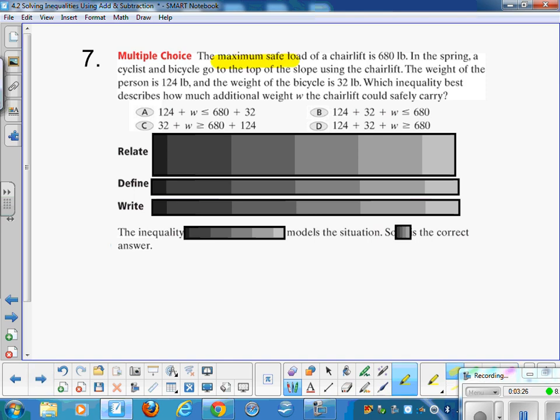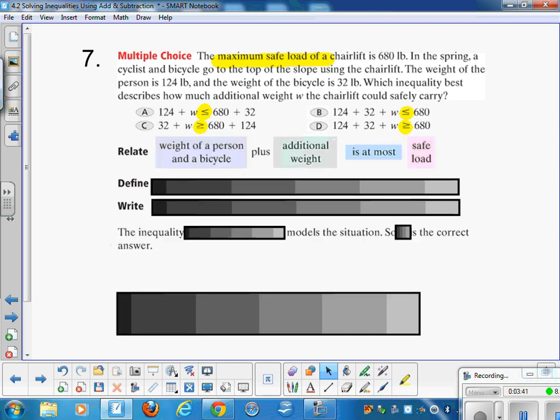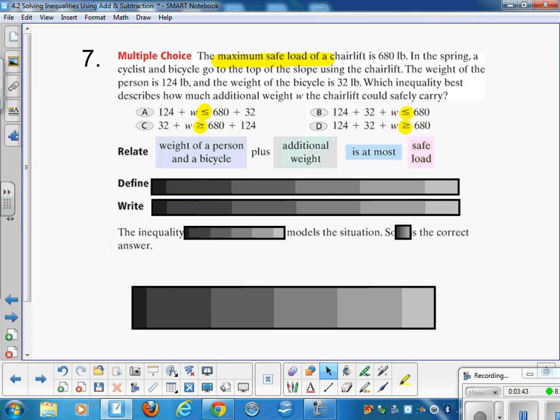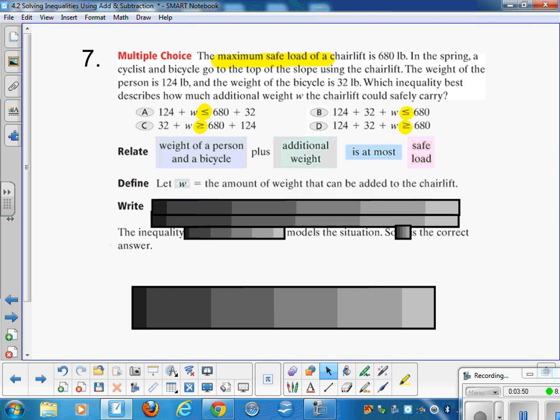If it says the maximum safe load, does that mean less than, equal to, greater than, or equal to? What do you think? That's going to help us decide here what's going on. So let's take a look. We want to kind of relate this. And it says basically the weight of a person plus any additional weight is at most the safe load. So how would we write that using the numbers that we know?